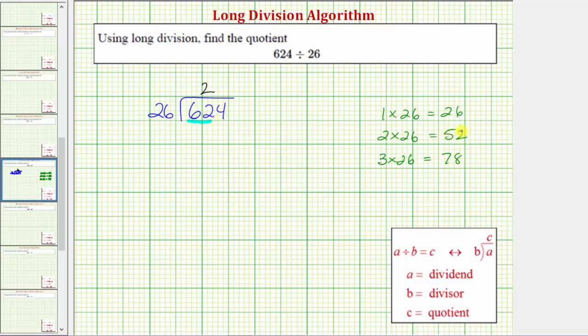Because 52 is less than 62, and we know there are two 26s in 52, we know there are at least two 26s in 62. And because 3 times 26 is more than 62, there are not three 26s in 62. Whichever way we use, we now know there are two 26s in 62.